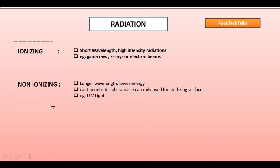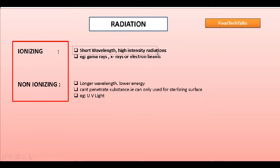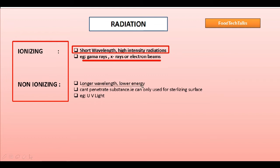Let us understand the difference between ionizing and non-ionizing radiations. Ionizing radiations are short wavelength, high intensity radiations — examples are gamma rays, X-rays, or electron beams. Non-ionizing radiations have longer wavelengths so they cannot penetrate substances and can only be used for sterilizing surfaces. An example is UV light used in the purification of water.